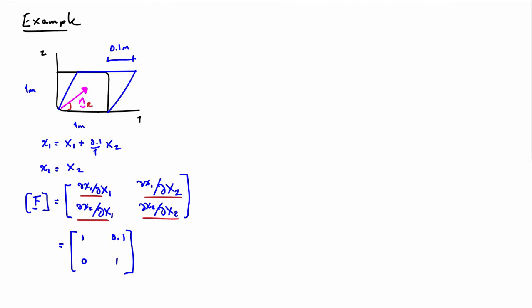Okay, so the next thing to do is to calculate the right Cauchy-Green deformation tensor. So C is equal to F transpose F. So we can fill in, since we know what F is, and now we can do the matrix multiplication there, and we get the components of C. So let's be precise here. So the components of C are equal to the components of F transpose F. And that gives us this matrix of components here of 1, 0.1, 0.1, and 1.01.